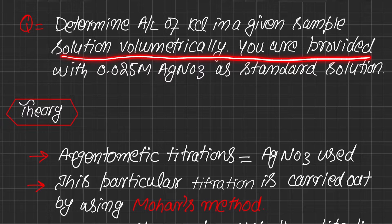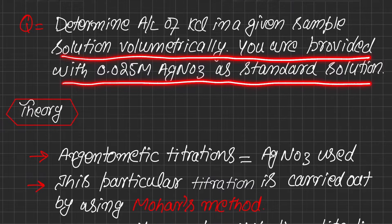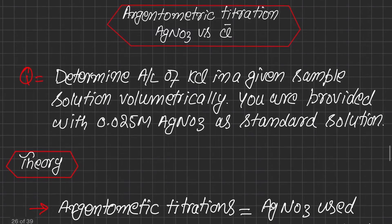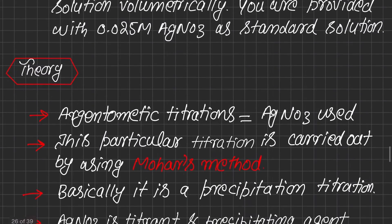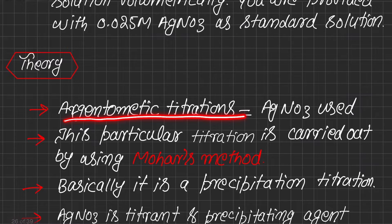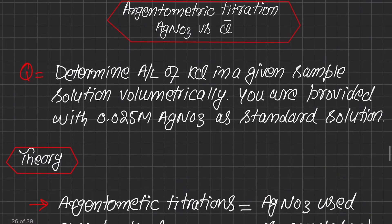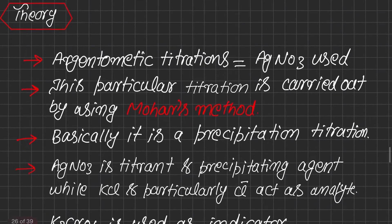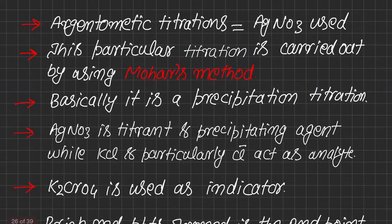The question of this titration is to determine the amount per liter of potassium chloride in a given sample solution volumetrically. You are provided with 0.025 molar silver nitrate as standard solution. In this titration, KCl (potassium chloride) is our analyte, whereas 0.025 molar silver nitrate is the standard solution. Titrations in which silver nitrate is used as titrant are called argentometric titrations — 'argentum' being the Greek word for silver.